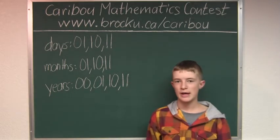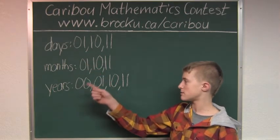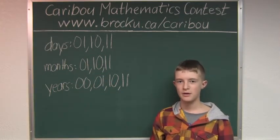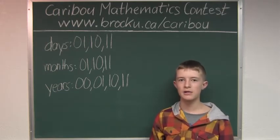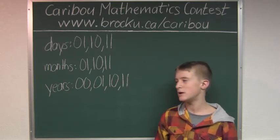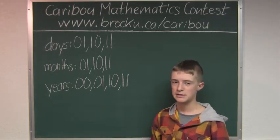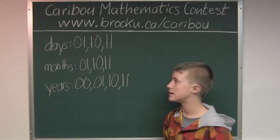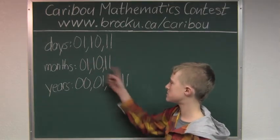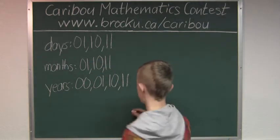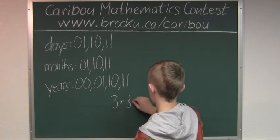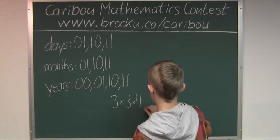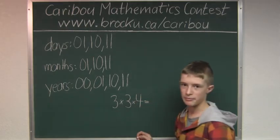Now let's check if each of these days, months, and years can be paired together. We know that each month has more than 11 days and each year has more than 11 months, so we know that each day, month, and year can be paired together. So we can just do 3 times 3 times 4, and that would be 36.